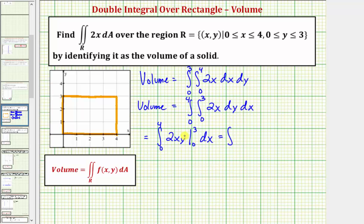Making the substitutions for y, we would have two x times three minus two x times zero. So this gives us the integral of six x minus zero, which is six x. Integrate with respect to x from zero to four.